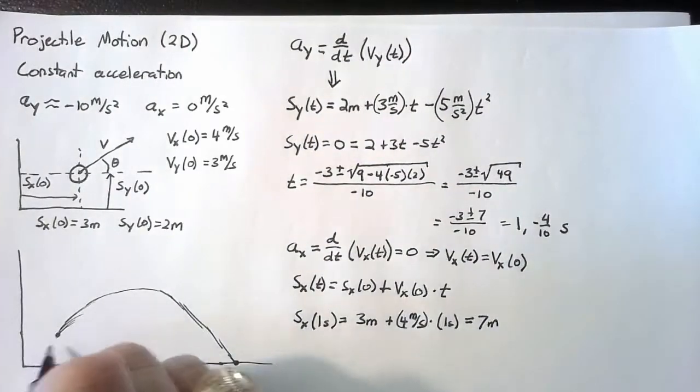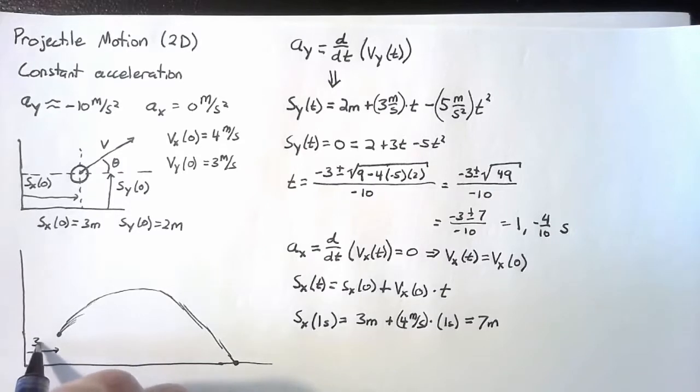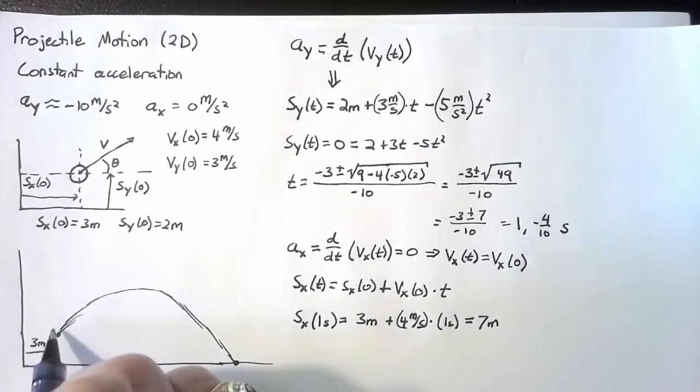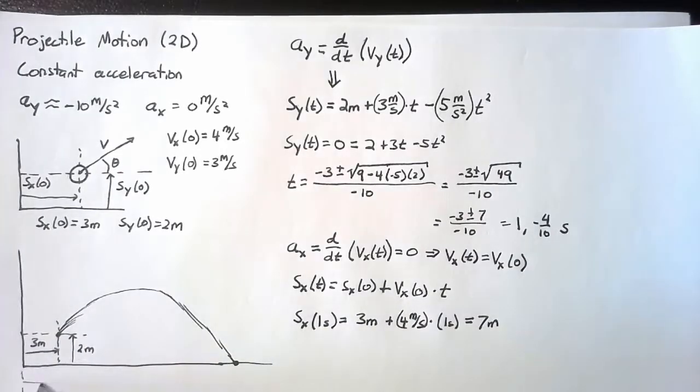So now we can draw this picture in a little more fully. This distance here is three meters. This distance was two meters. And the distance until the ball actually hits the ground was seven meters.